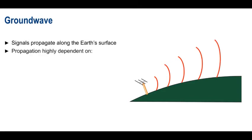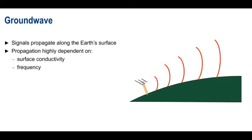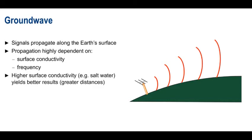Ground wave propagation is, however, highly dependent on two different factors: the conductivity of the surface and the frequency of the transmitted signal. In general, higher surface conductivity gives better results in the form of greater distances that can be covered. Salt water has excellent conductivity, especially compared to dry or rocky land, so ground wave is a good choice for ship-to-ship or ship-to-shore communications.